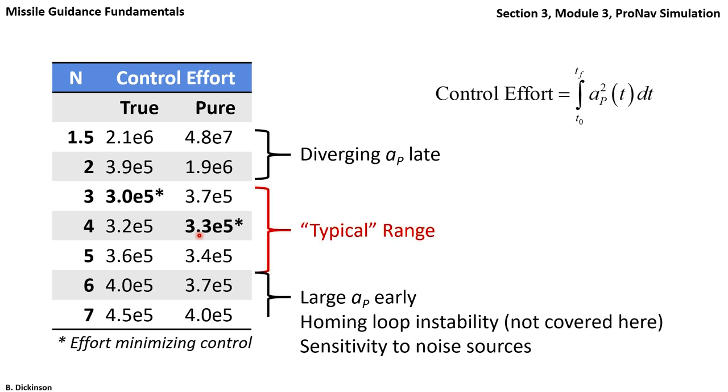In textbooks, a typical range for N is reported to be between 3 and 5. And that happens to lie where the control effort minimizing values of N exists in this example.